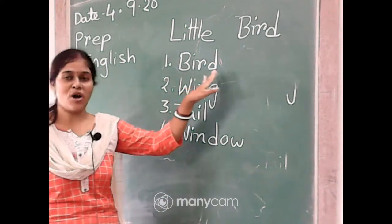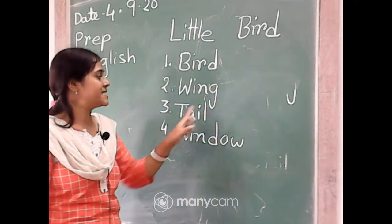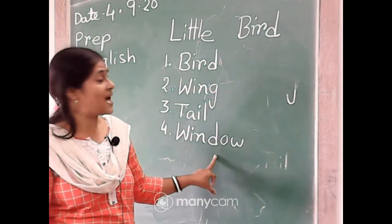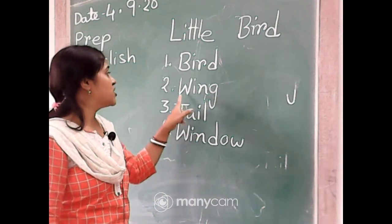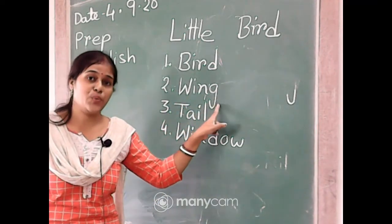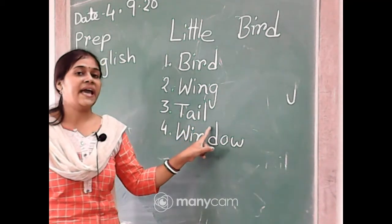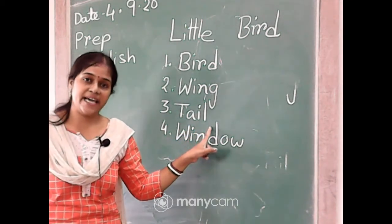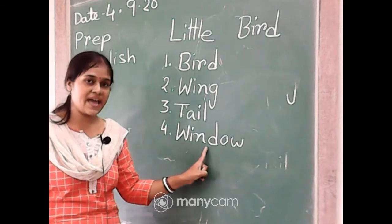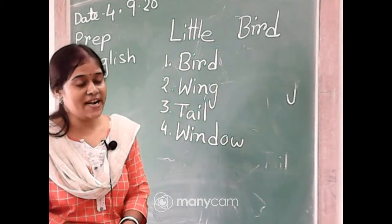So you have already learned the word spelling, and these three are new to you. You must learn these three spellings: W-I-N-G, V-D-A-I-L-T-E-L, and W-I-N-D-O-W — window.